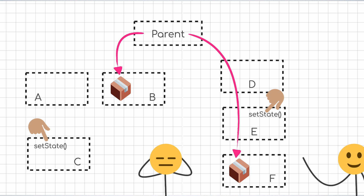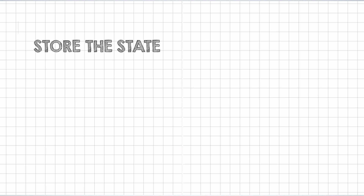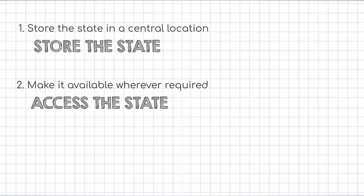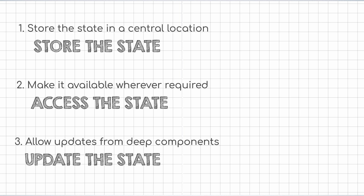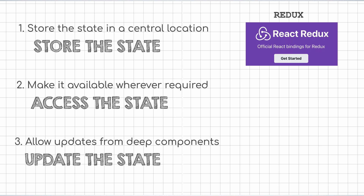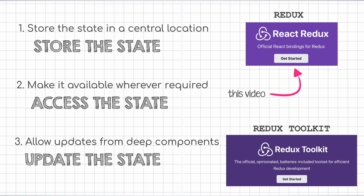That is the perfect setup for the introduction of a state management library. Basically, we are looking to solve these three problems. Firstly, how to store the state in a central location so that it acts as a single source of truth? Secondly, how do we make that latest state available inside all the components that need it? Thirdly, how do we trigger updates to the state from any component downstream? In this first video, we will look into how the Core Redux library solves these three problems. In the next video, we will get hands-on with Redux Toolkit to see how to make it all happen.